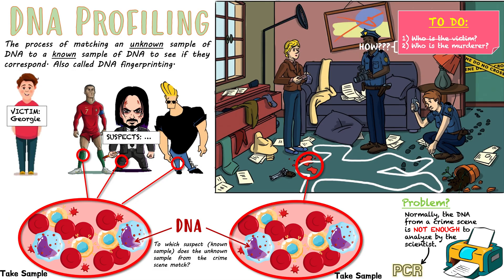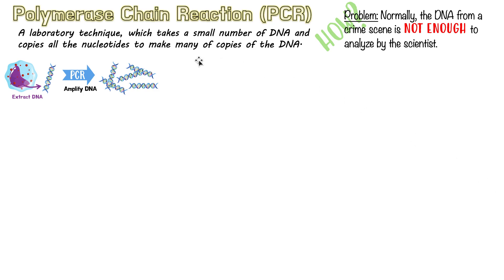Let's go into PCR. As a recap, we have the unknown sample and the known samples. First, what we want to do is replicate the DNA from the crime scene so we have more of it and can do all these tests. PCR stands for polymerase chain reaction, and we'll see why it's called this as we go.